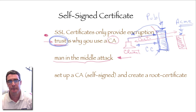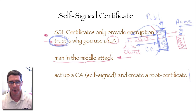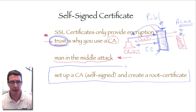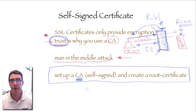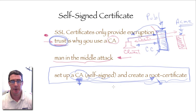Sometimes you need to use self-signed certificates — for example, you're doing some testing in a lab and want to test a website, so you simply make a self-signed certificate. Most web servers have the ability to do something a little more secure: you can actually set up a small certificate authority on your own organization's web server. It will be self-signed, but this creates a root certificate. If you install this root certificate on all the machines in your organization, all those machines will be able to validate that it came from your machine, so you're far less prone to a man-in-the-middle attack.